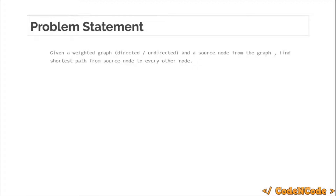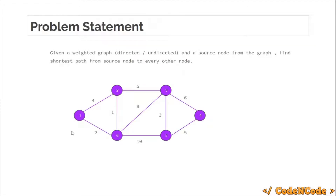So the problem statement, as you already know from Dijkstra's, is that you are given a weighted graph which can be directed or undirected, and you are also given a source node. You have to find the minimum distance of every other node from the source node. Suppose this was the graph and the source node was this — you have to find the minimum distance from this to every single node including itself. So this is the problem statement for the Dijkstra's algorithm.